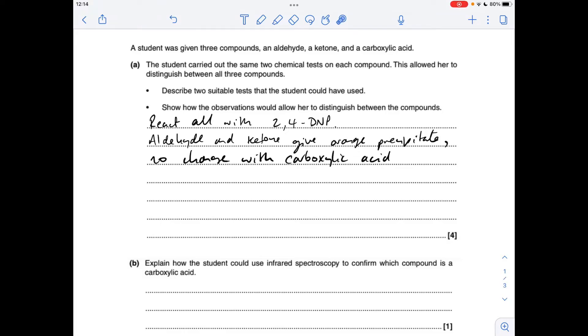To distinguish between the three compounds—aldehyde, ketone, and carboxylic acid—first thing you do is react all three with 2,4-DNP. The aldehyde and ketone both give orange precipitates, but there's no change with the carboxylic acid. So that's how you could identify that.